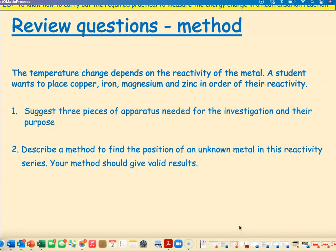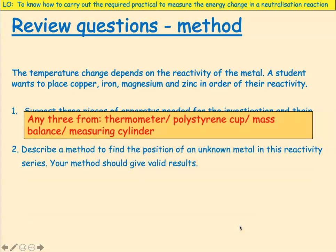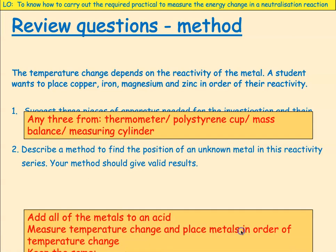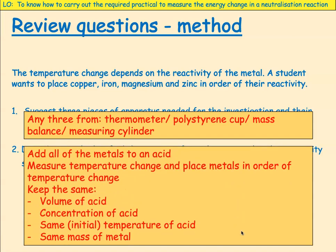Three pieces of apparatus needed: a thermometer to measure the temperature, a polystyrene cup, a mass balance to measure the amount of metal, and a measuring cylinder. Method: add all of the metals to an acid one at a time, measure the temperature change, and place the metals in order of temperature change. Keep the same: volume of acid, concentration of acid, starting temperature of the acid, and the same mass of metal.